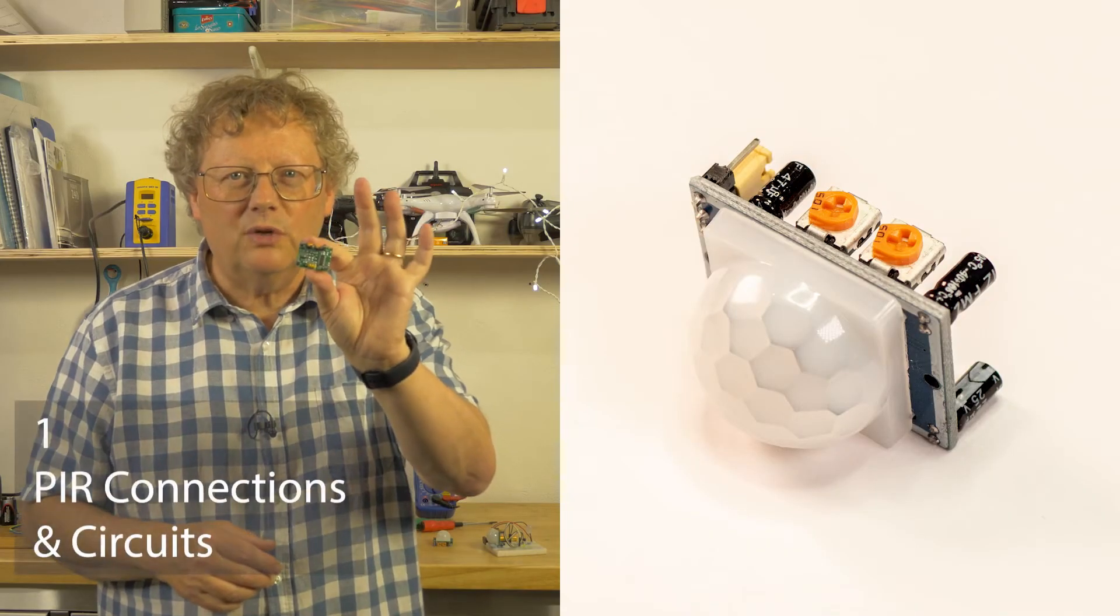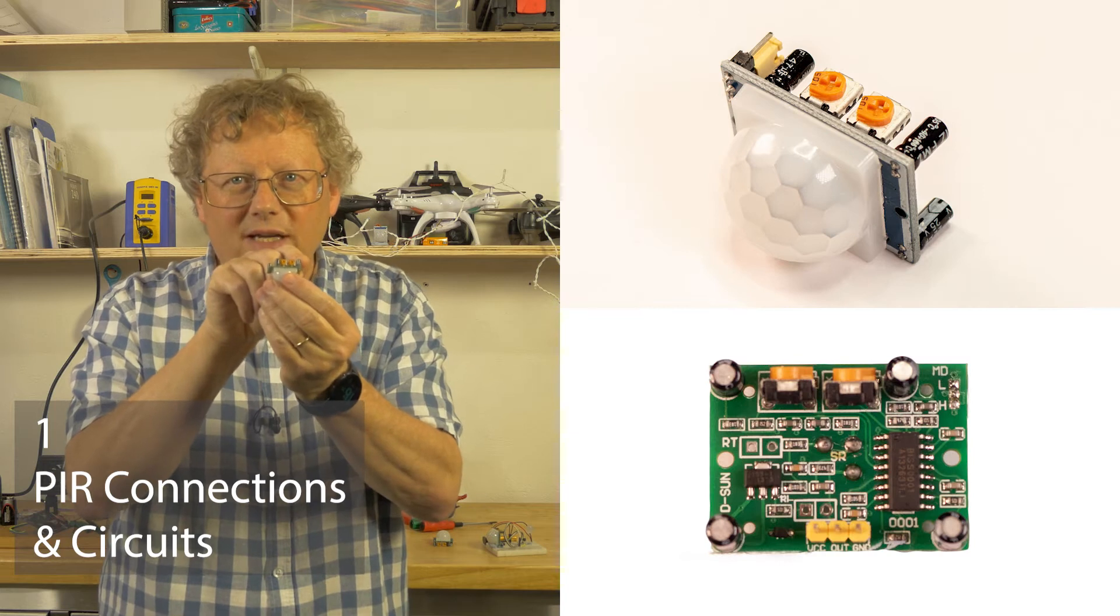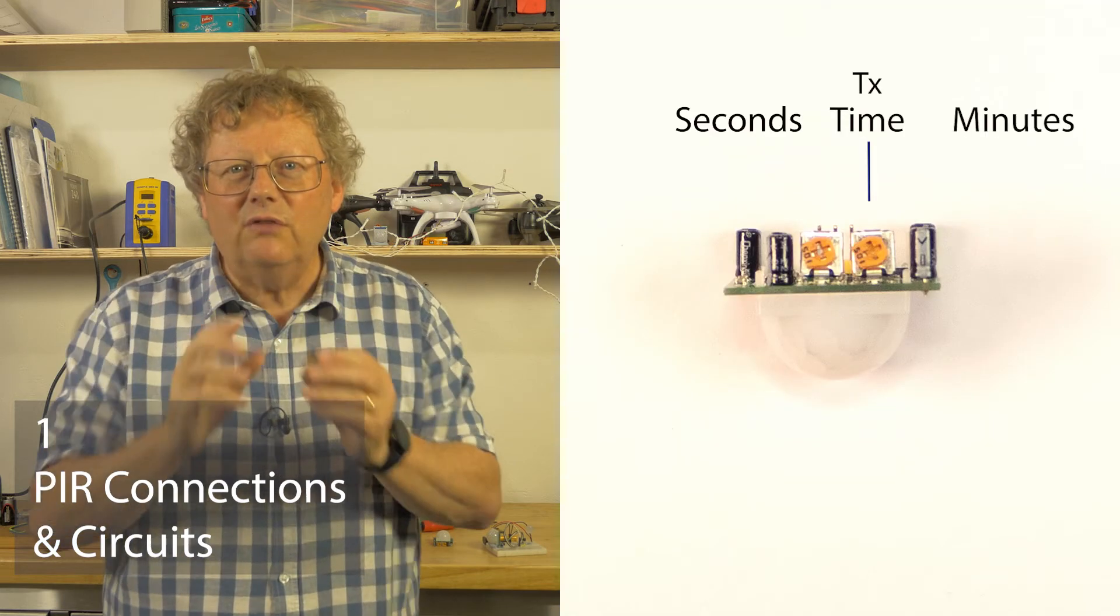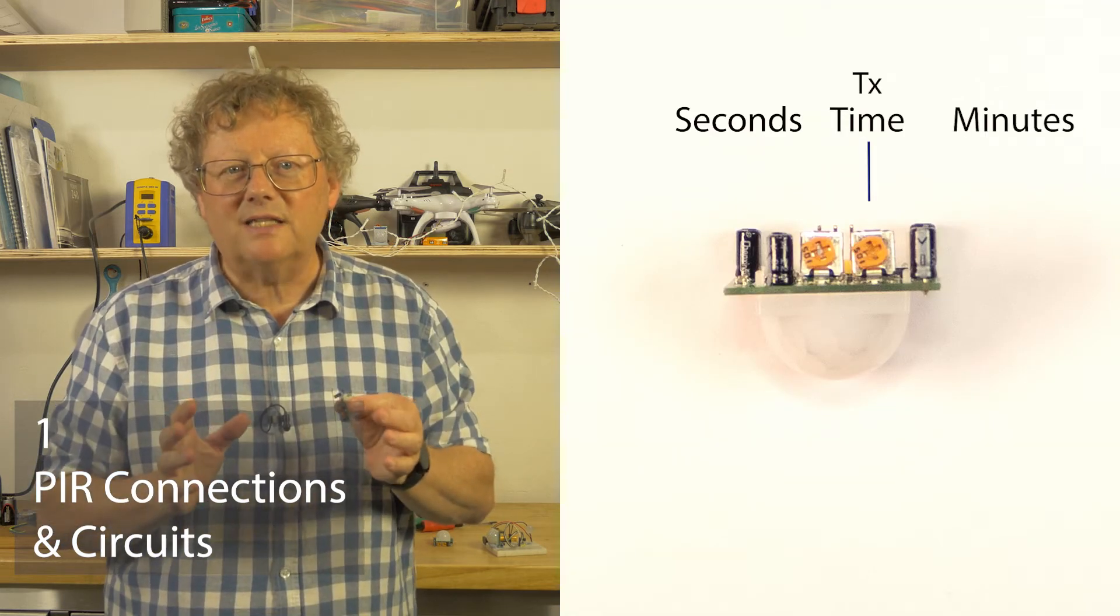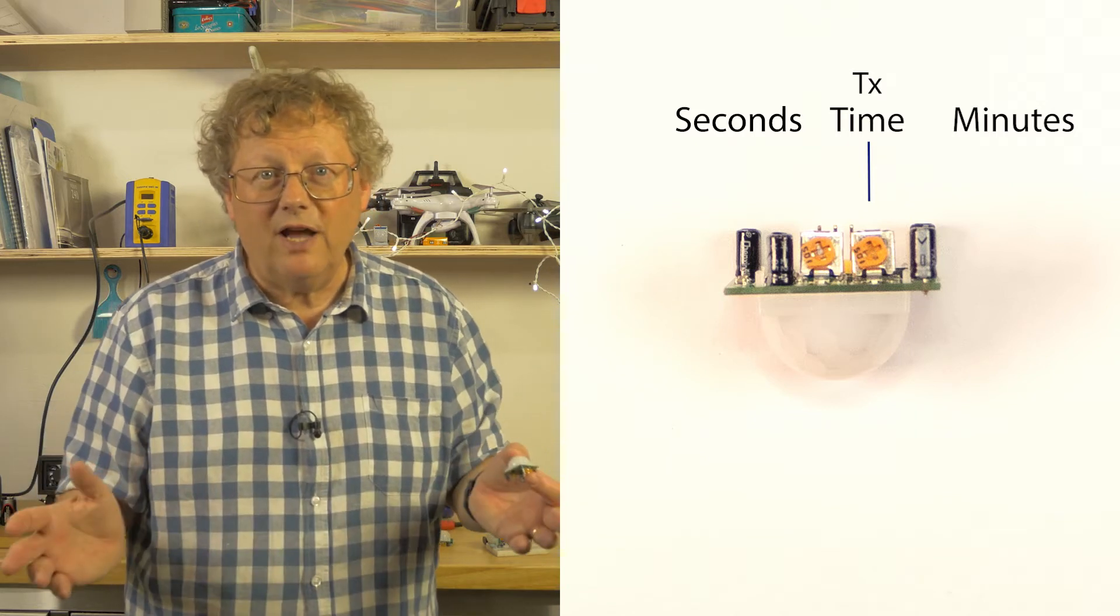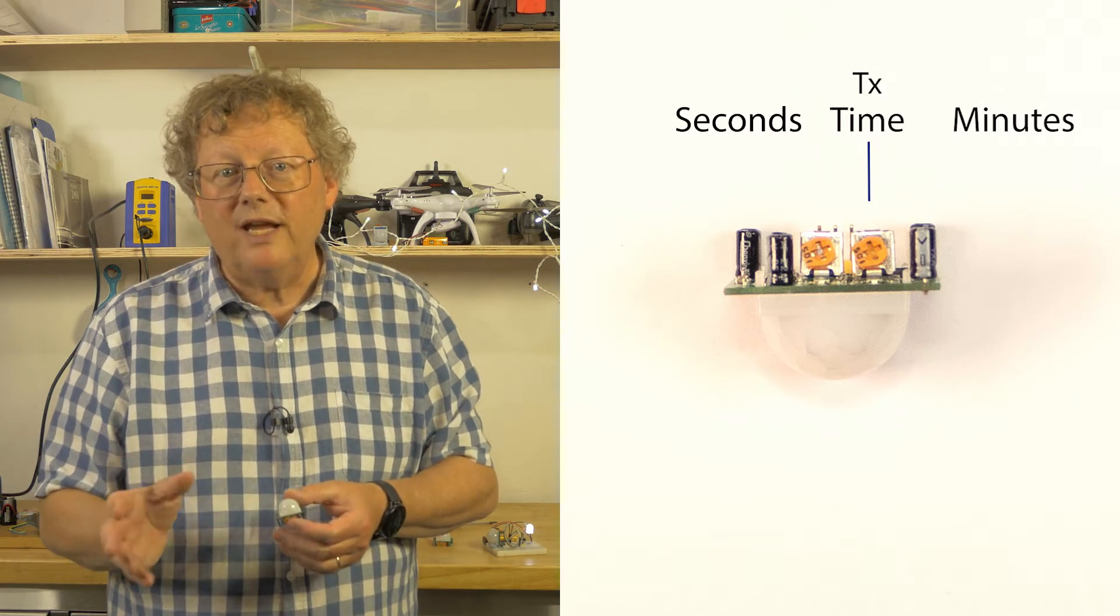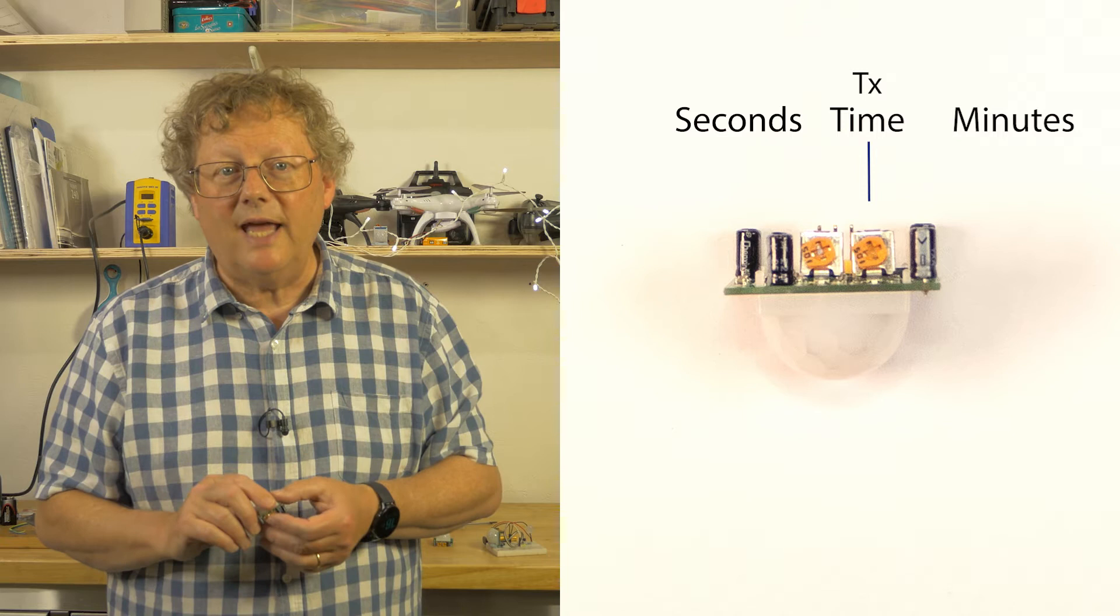PIR sensors are usually supplied as a module. The sensor is on a board with a few other components and two trimmers to adjust the timing and sensitivity. The right side trimmer or the one marked TX adjusts the time that the sensor stays on from a few seconds to about five minutes. After the on period has ended there's a short break before the sensor resets and is ready to switch on again.